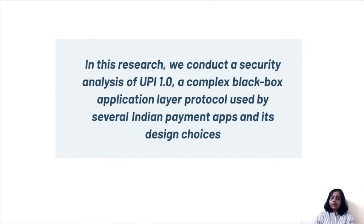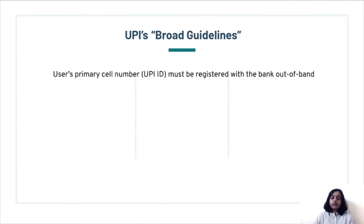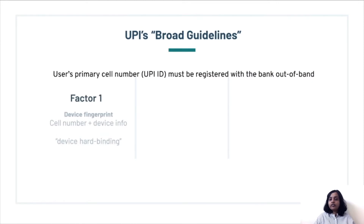In this research, we conduct a security analysis of UPI 1.0, a complex black box application layer protocol used by several Indian payment apps and its design choices. The makers of UPI have published a few broad guidelines. For a user wanting to use UPI, their primary cell number, which is also their UPI ID, has to be registered with the bank out of band.